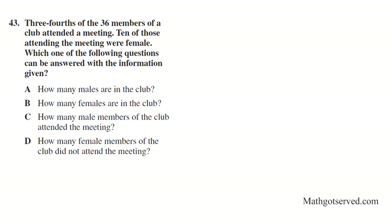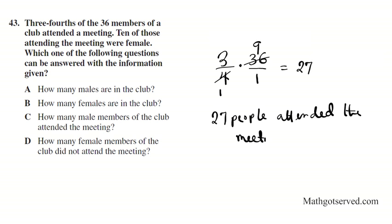Let's move on to the next question. Question 43. It says 3 fourths of 36 members of a club attended a meeting. 10 of those attended were female. Which of the following questions can be answered with the information given? So 3 fourths of 36 members attended a meeting. What is 3 fourths of 36? 3 fourths of, of is multiplied by 36. I can cross reduce. 4 goes into 36 nine times. 9 times 3 is 27. So 27 people attended the meeting. Since 10 of them were female, 10 female, then the rest was male. 27 minus 10, so we have 17 males.